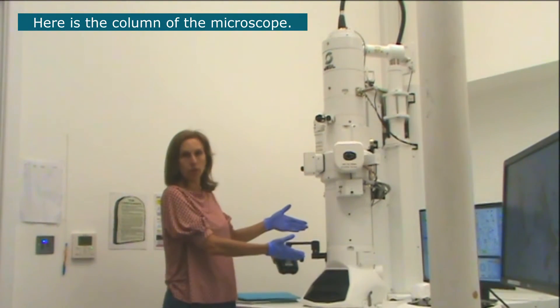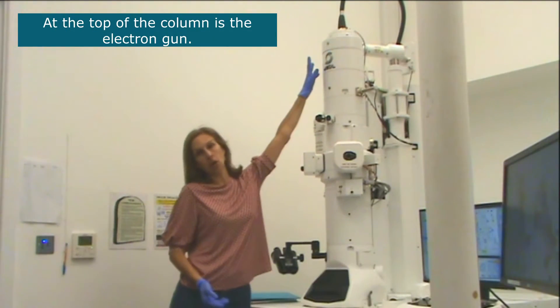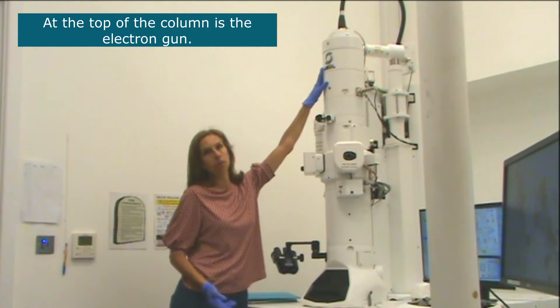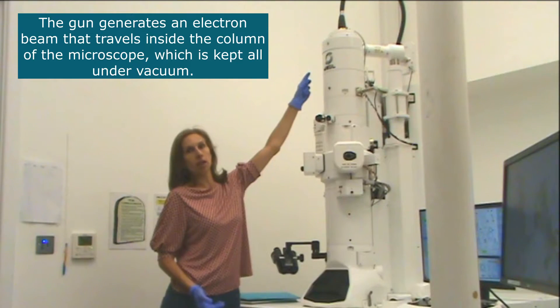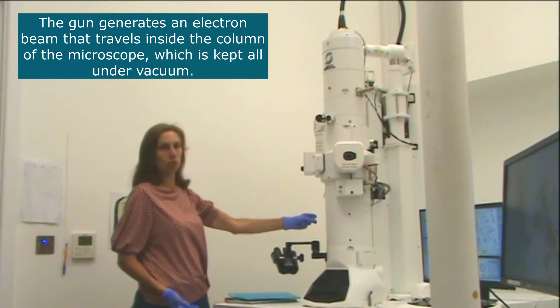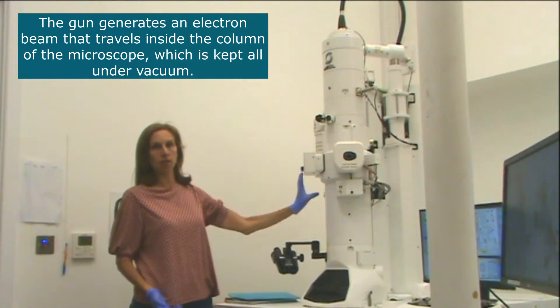Here is the column of the microscope. At the top of the column there is the electron gun. The gun generates an electron beam that travels inside the column of the microscope which is kept all under vacuum.